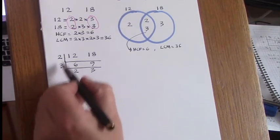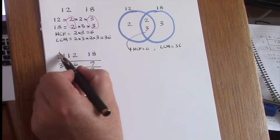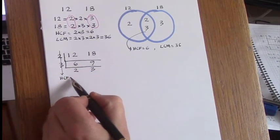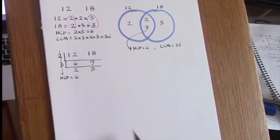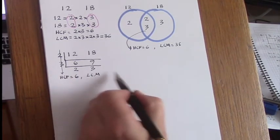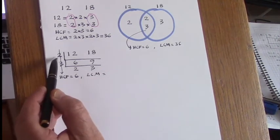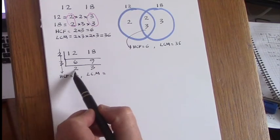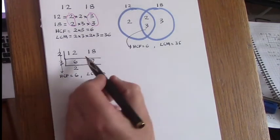For the HCF, we multiply vertically these two numbers, so the HCF is 2 times 3 is 6. And for the LCM, we can multiply these two numbers together with the ones at the bottom, 2 times 3 times 2 times 3, or more quickly,